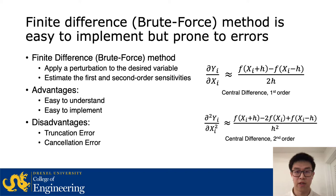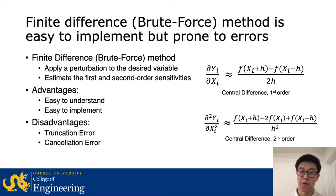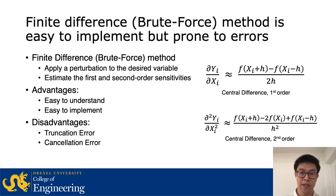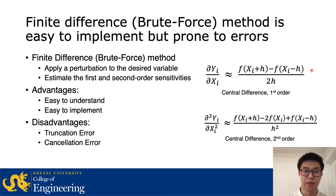The advantages of this method are that it is easy to understand and implement. The two major disadvantages are truncation error, which comes from ignoring all the high-order terms in the Taylor expansion, and this can be reduced by reducing the perturbation size. But when we reduce the perturbation size, another error occurs: cancellation error. When h is very small, computers will have a hard time distinguishing f(xi + h) and f(xi - h), so the numerator becomes zero and our sensitivity information will also be zero, which is incorrect.